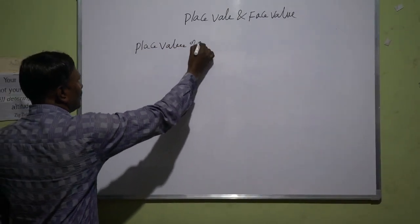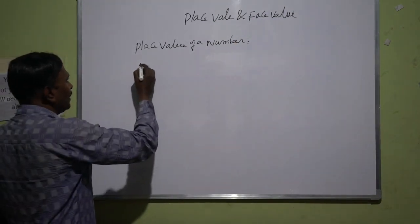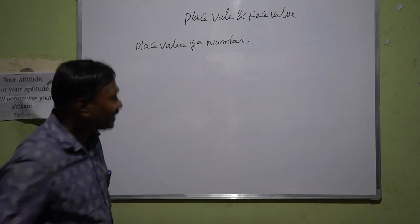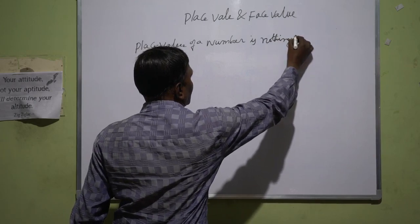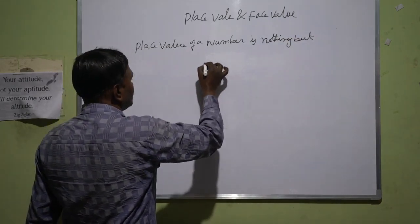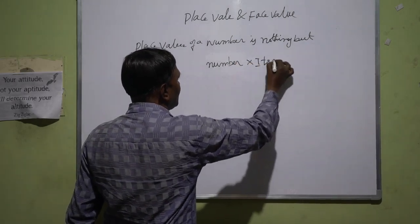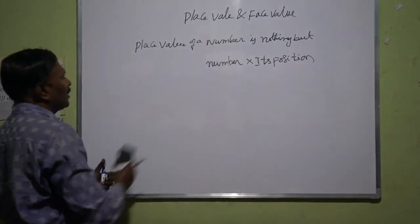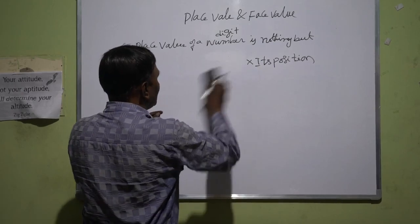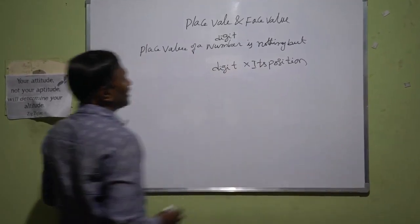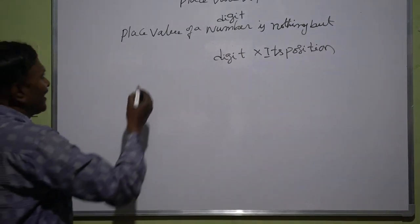Place value of a number. See the example — what exactly is a place value? So place value of a number is nothing but the number into its position. We can say that the place value of a digit is digit into its position. We will discuss with one example so that you will get it.